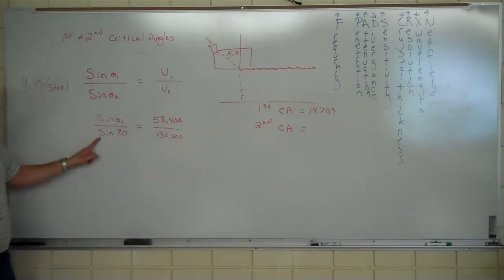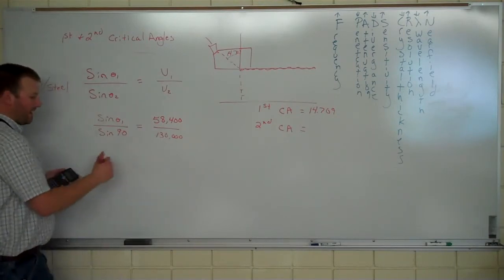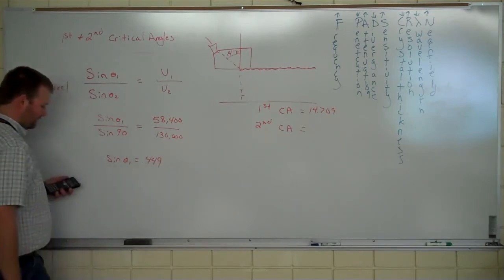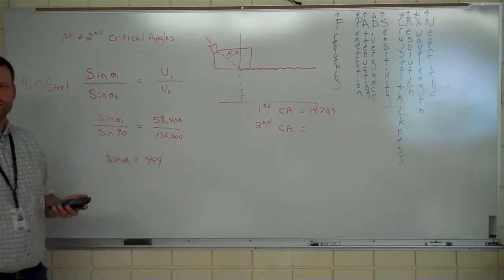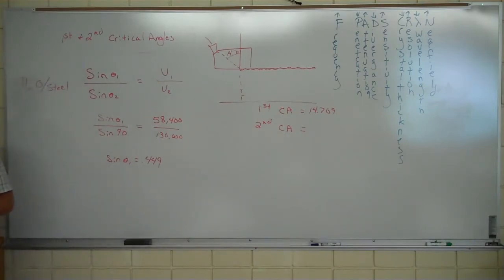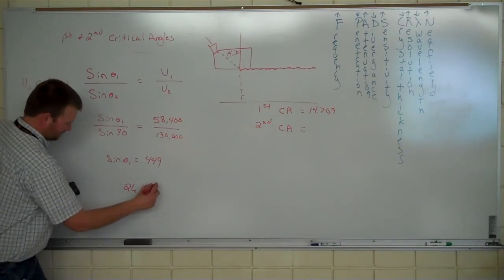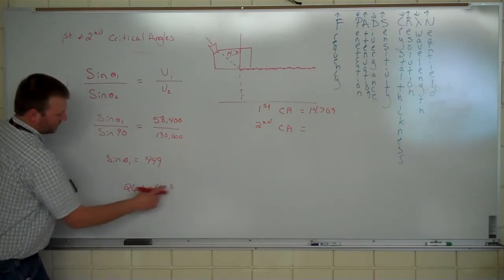Sine of 90 again is 1, right? So 1 times 58,400 is itself. So 58,400 divided by 130,000 equals what I have. 0.449, right? And then it stretches on. I've got 0.449230769. You good with that? So I'm just going to stretch it out to 3 here. Now I need inverse sine of 0.449. 26.69434. That's plenty. What number are you going to get? That was number one. 26.69 degrees for the second critical angle.